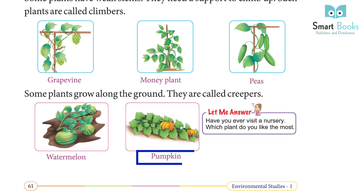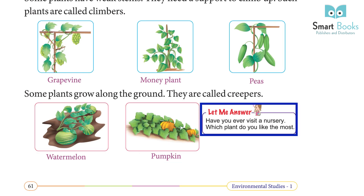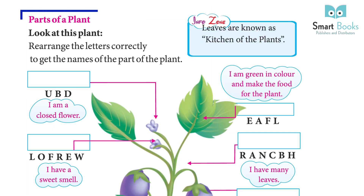Some plants grow along the ground. They are called creepers — watermelon, pumpkin. Let me answer: have you ever visited a nursery? Which plant do you like the most?